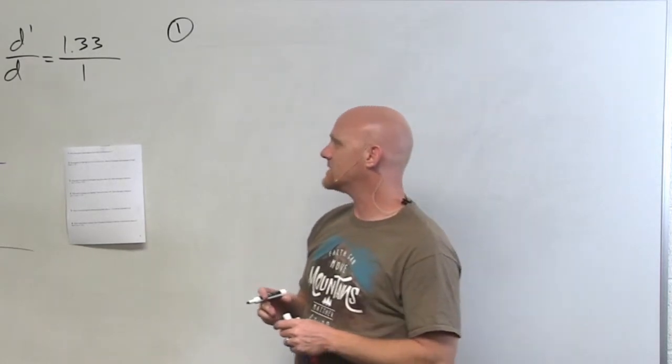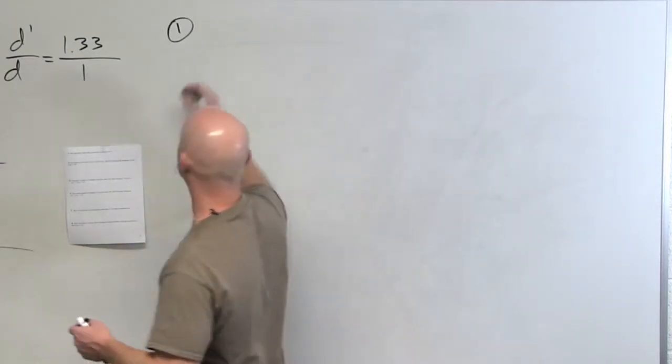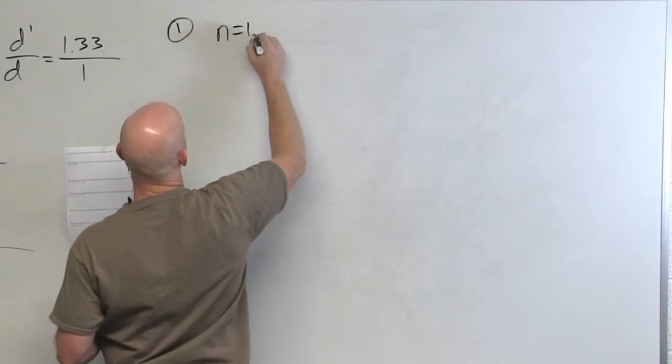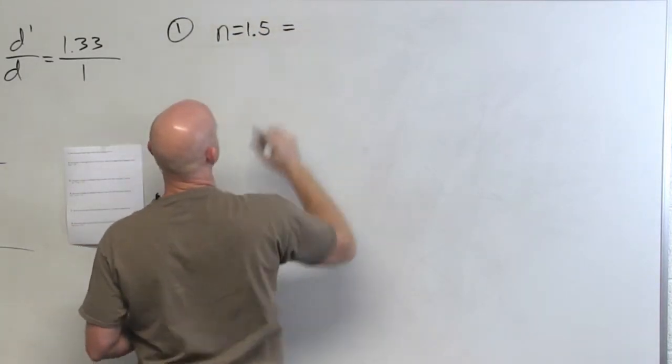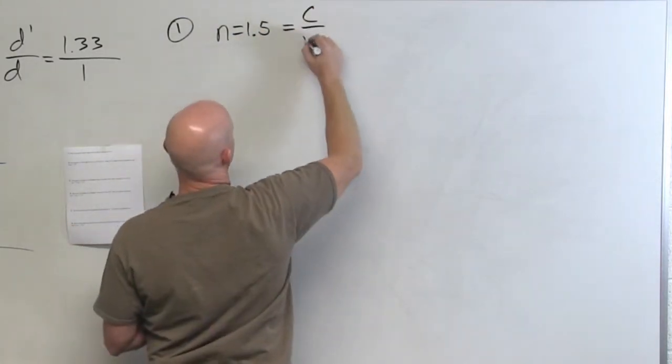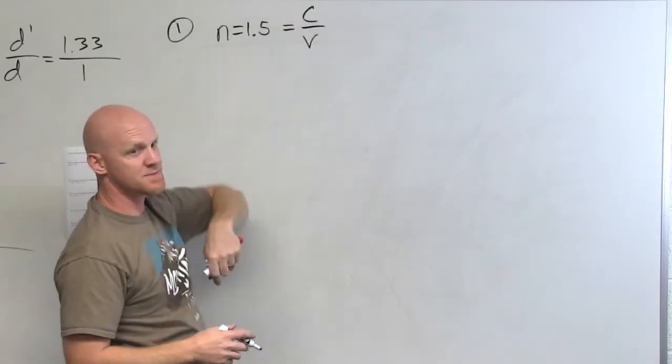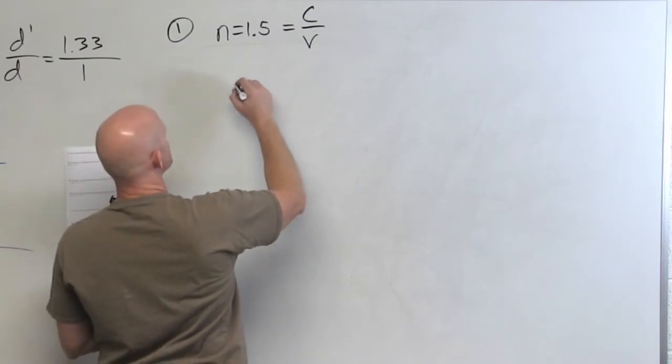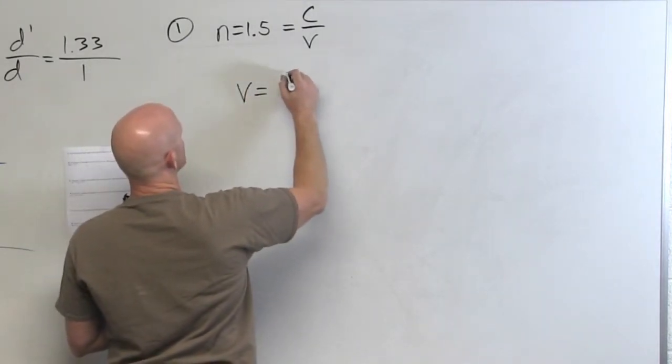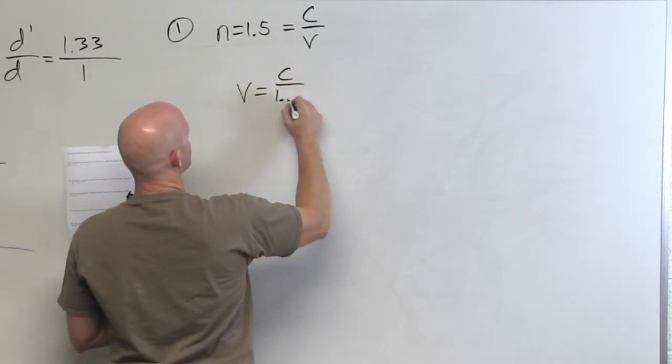Number one, what is the speed of light in glass with an index of refraction of 1.5? So in this case, index of refraction is just the speed of light in a vacuum divided by the speed of light in your medium. If we rearrange this, we can say that the speed of light in our medium is equal to the speed of light over 1.5.